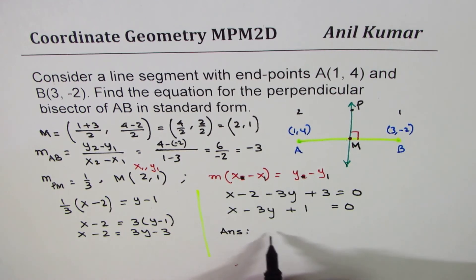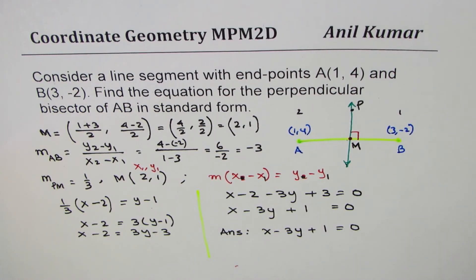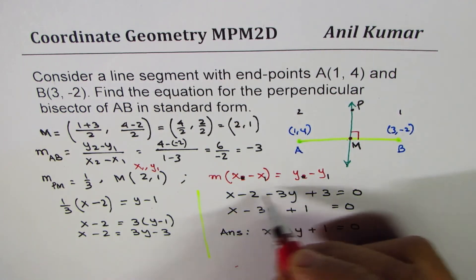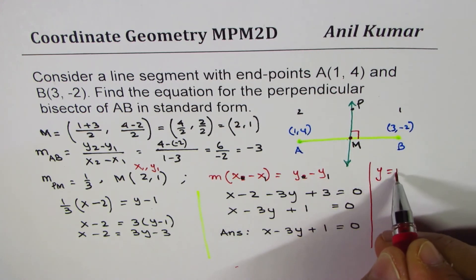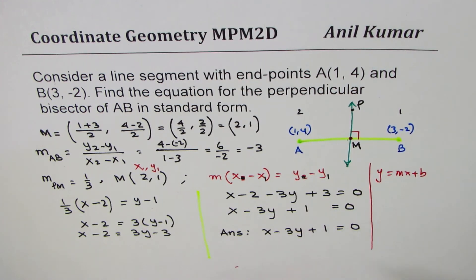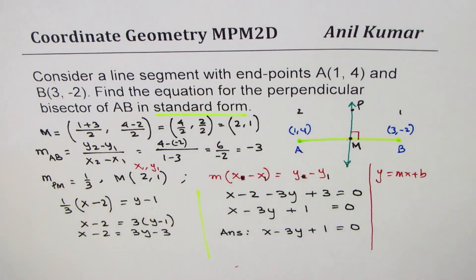So, our answer is x minus 3y plus 1 equals to 0. So, I hope you find it absolutely clear. Some of you who are not very familiar in using this line equation, you could actually use y equals to mx plus b. Then, rearrange and write down your answer in standard form. It's important to write the answer in standard form as that is part of your question. I hope that's absolutely clear. Thank you and all the best.